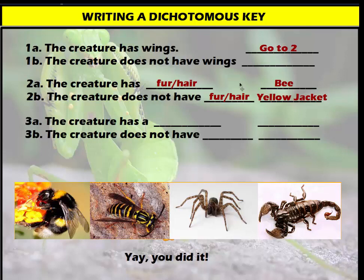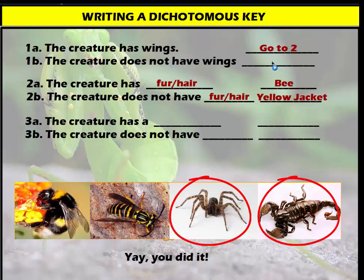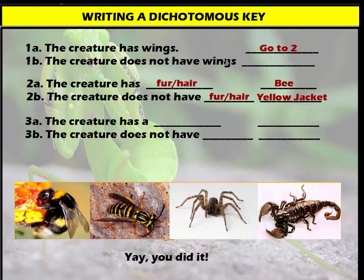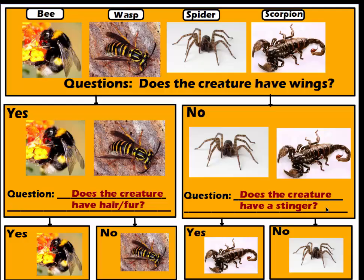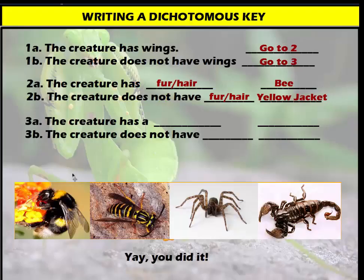Now let's finish up the dichotomous key. Statement 1b says the creature does not have wings. The two creatures without wings were the spider and the scorpion. Since that still doesn't single out a specific organism, we can't label either one here. So we go to couplet 3 — we already used couplet 2, so we move down to couplet 3. Our question for this group was: does the creature have a stinger?